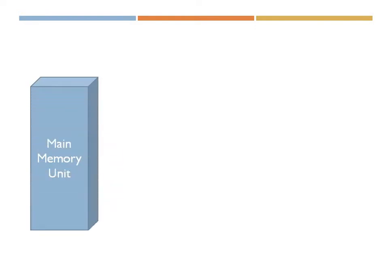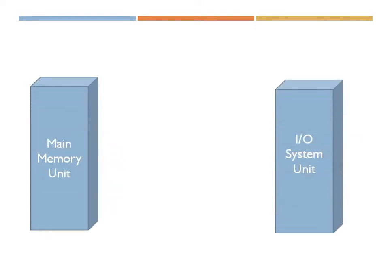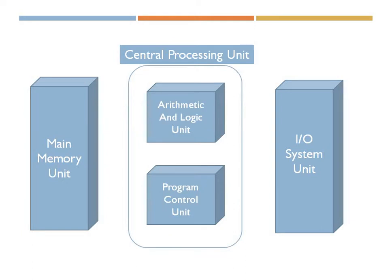The Von Neumann machine consists of three major components. The very first component is the main memory unit, the second one is the input/output system unit, and the third and most important one is the central processing unit, which consists of the arithmetic and logic unit and the program control unit, along with various interconnections between them.